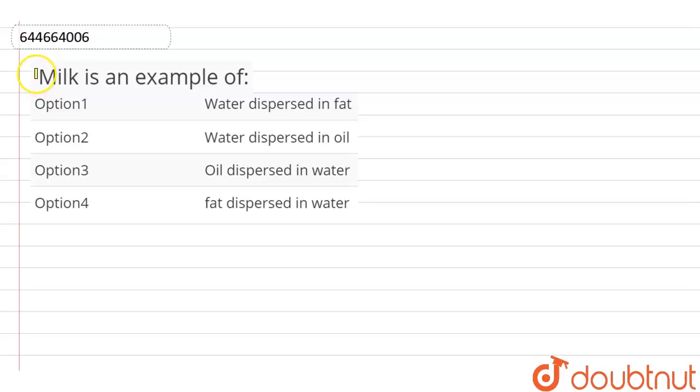Here is the question: milk is an example of? Option first, water dispersed in fat. Option second, water dispersed in oil. Option third, oil dispersed in water. And option fourth, fat dispersed in water.